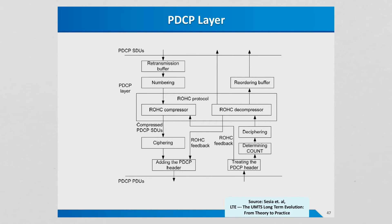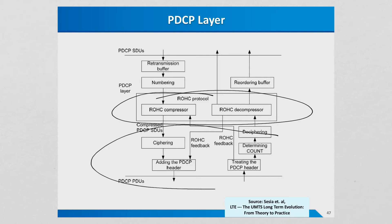Looking at the layers in more detail: the PDCP, or packet data convergence protocol, does two main things. First, it performs header compression. For something like voice over IP, packets are small, yet their headers contain full IP addresses which can be quite large. LTE uses robust header compression, or ROHC, to reduce header size. Second, PDCP handles ciphering — cryptographic ciphering — which provides security in the system by performing ciphering and deciphering.